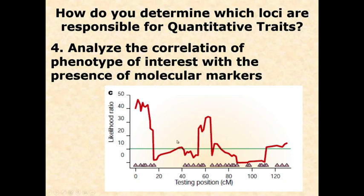Whichever allele doesn't match the general population distribution is an indicator that some genetic contributing factor exists in the neighborhood of those markers. We do a statistical analysis; the green line represents 'significantly different from the main population.' Along the x-axis we plot the chromosome from beginning to end. If markers are significantly correlated, the score goes above the green line, indicating a region that contributes to the trait.